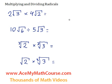Now let me introduce how to multiply and divide radicals. I'm going to use a few examples, starting with 2 square root of 3 times 4 square root of 2.